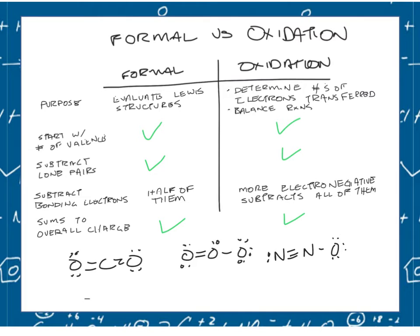Where they get different is what you do with the bonding electrons. In formal charge, you subtract half the bonding electrons — it works out to subtracting the number of bonds because a bond is made of two electrons. We're treating this as a perfectly covalent bond where they're perfectly sharing and each atom gets half the electrons. Oxidation number, on the other hand, treats it as a perfectly ionic bond, where the more electronegative atom gets all of the electrons in the bond. So we're kind of pretending that covalent structures are ionic bonds to see where the electrons would go.